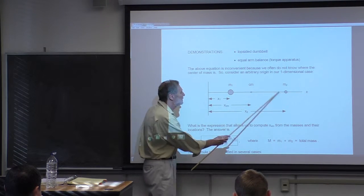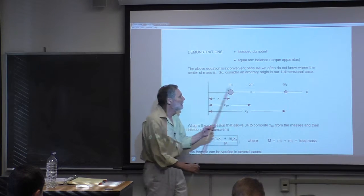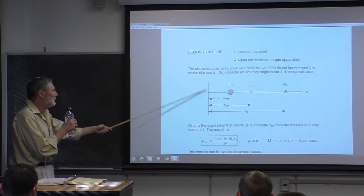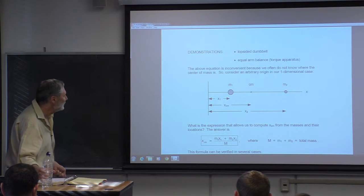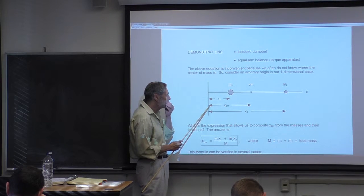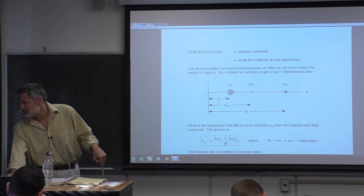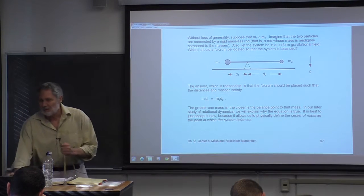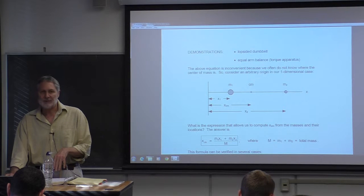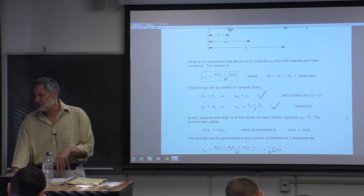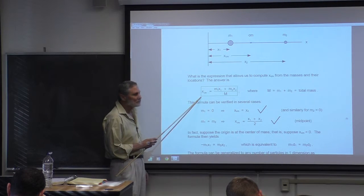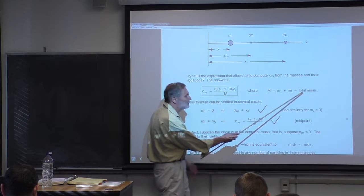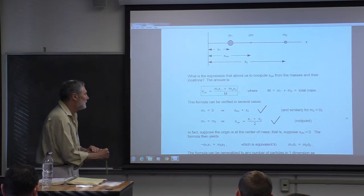I want you to imagine we don't know where the center of mass is. We have an origin — you can put the origin anywhere you want on this x-axis. We're just doing it one-dimensionally here; we'll generalize in a moment. I'm just going to give you the formula and then show that it's all consistent. This capital M here we'll routinely use as the total mass.